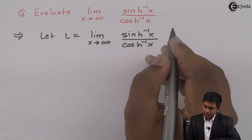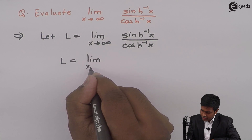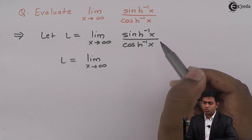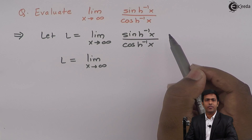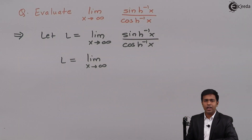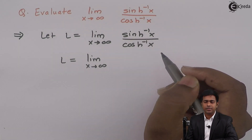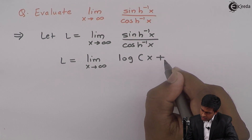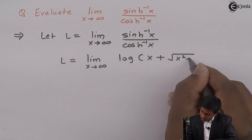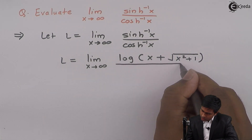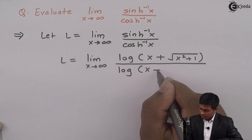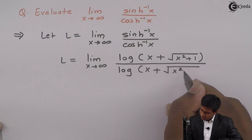Next I am substituting the formula for this. We have the formula of hyperbolic sine inverse x in terms of logarithm, and why we are doing this is because most students do not know the derivative of hyperbolic sine inverse of x and hyperbolic cosine inverse of x. So the formula is log of x plus square root of x squared plus 1. Similarly, the formula of hyperbolic cosine inverse of x is log of x plus square root of x squared minus 1.